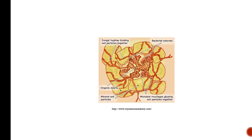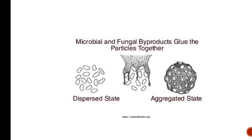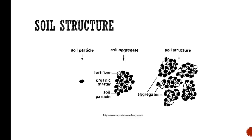Here's a sample of what soil organic matter interaction looks like. You've got bacterial colonies, fungal hyphae binding soil particles together, organic debris which would be humus — the stable portion of organic matter — mineral soil particles, and exudates that are gluing the soil particles together. Microbial and fungal byproducts glue the particles together. On the left-hand side we've got our dispersed state; here is that glue; and then you've got an aggregated state. So you've got a soil particle, a soil aggregate, and then finally aggregates that become soil structure.